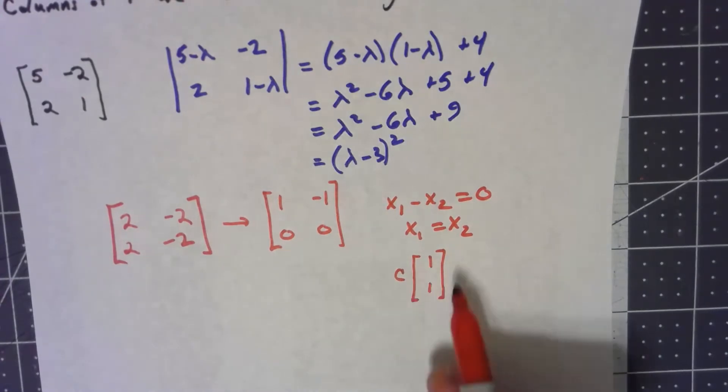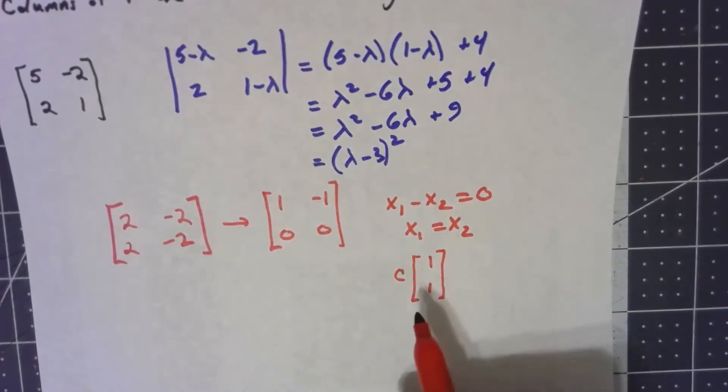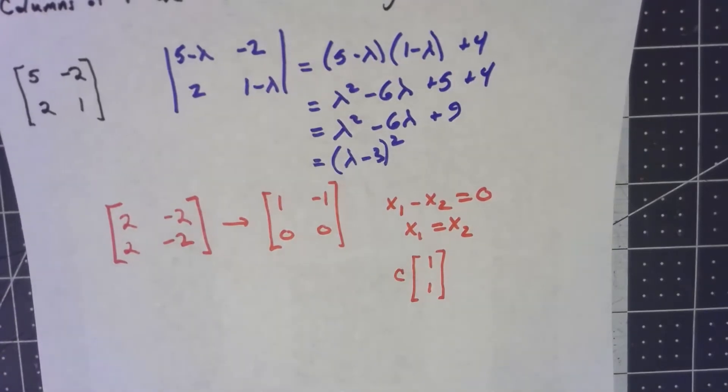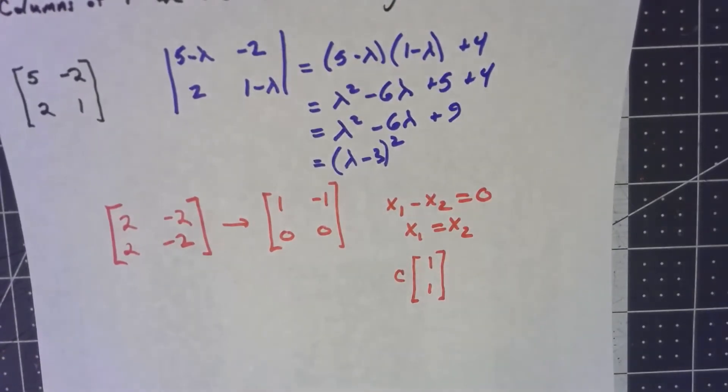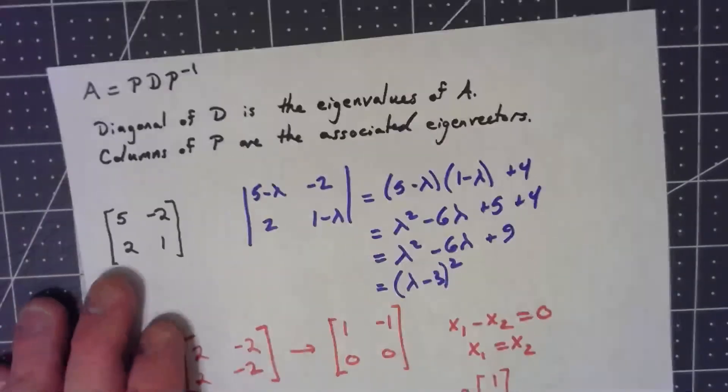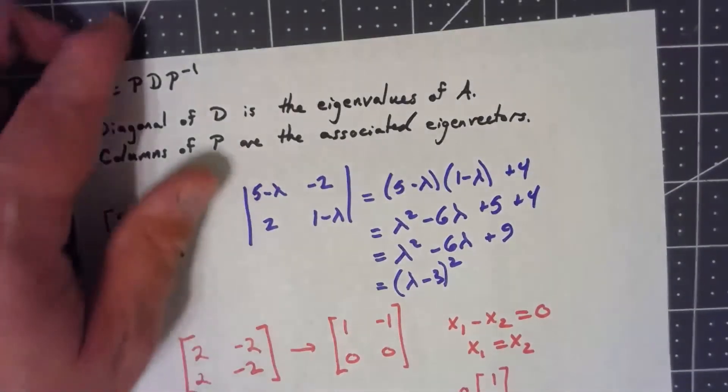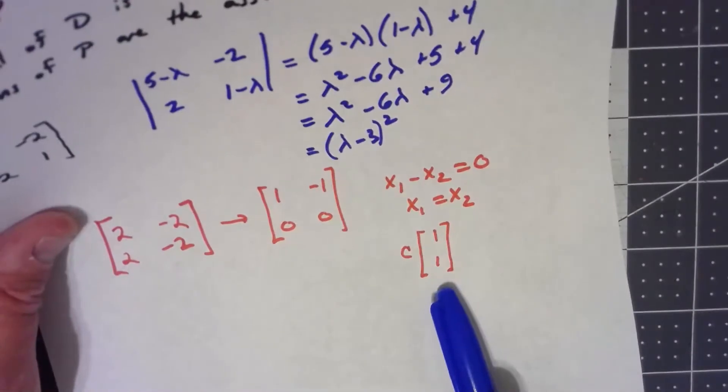So we only get one type of eigenvector: we get anything which is a constant times [1, 1]. And because we don't have two linearly independent eigenvectors, we can't create a basis. So right away, this matrix is not diagonalizable. We couldn't find a basis of eigenvectors, so it's not diagonalizable.